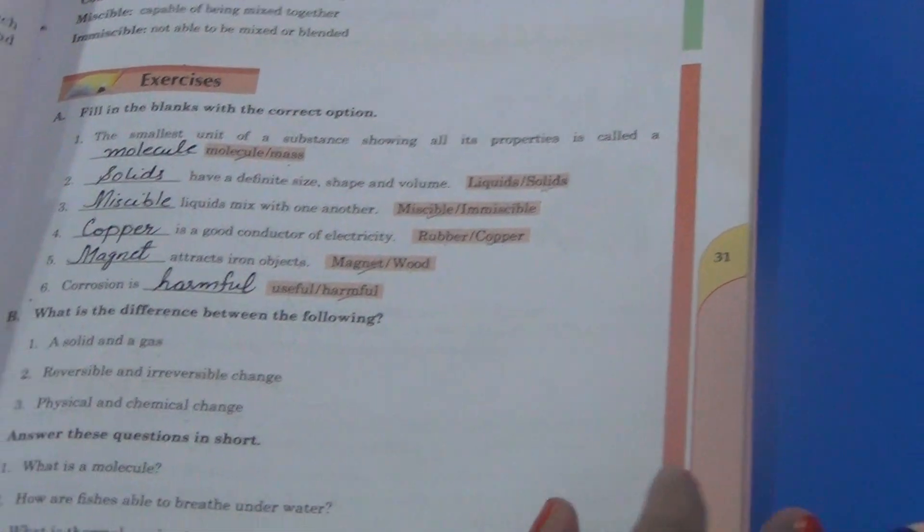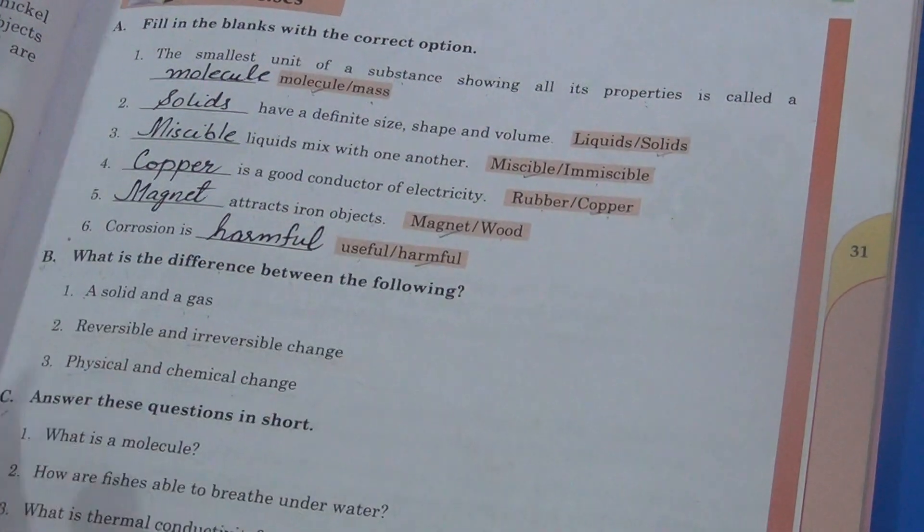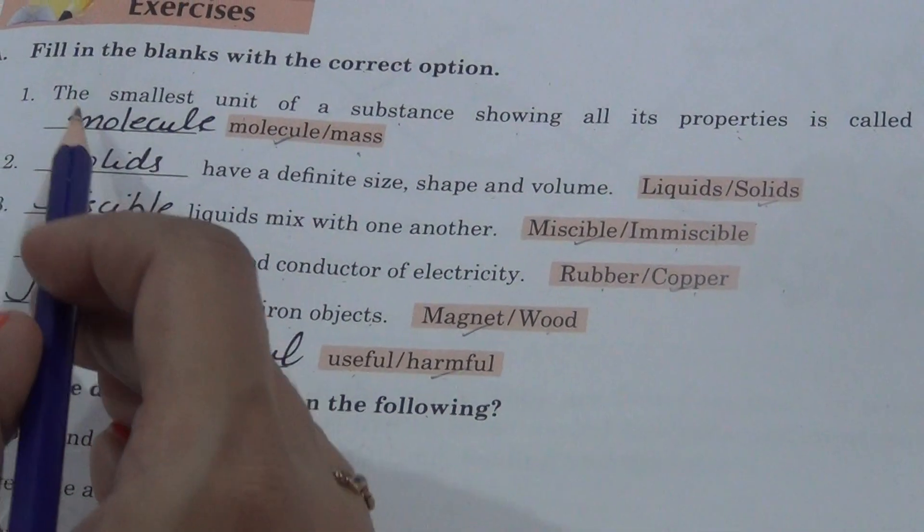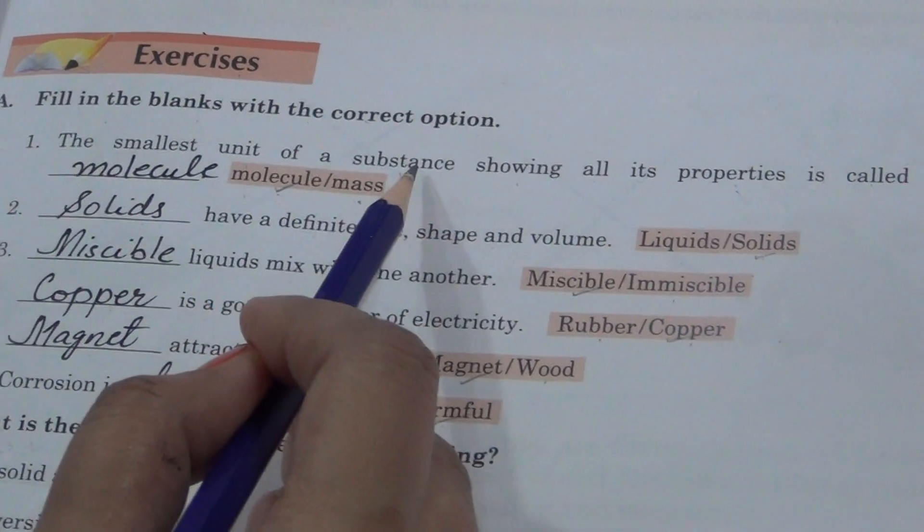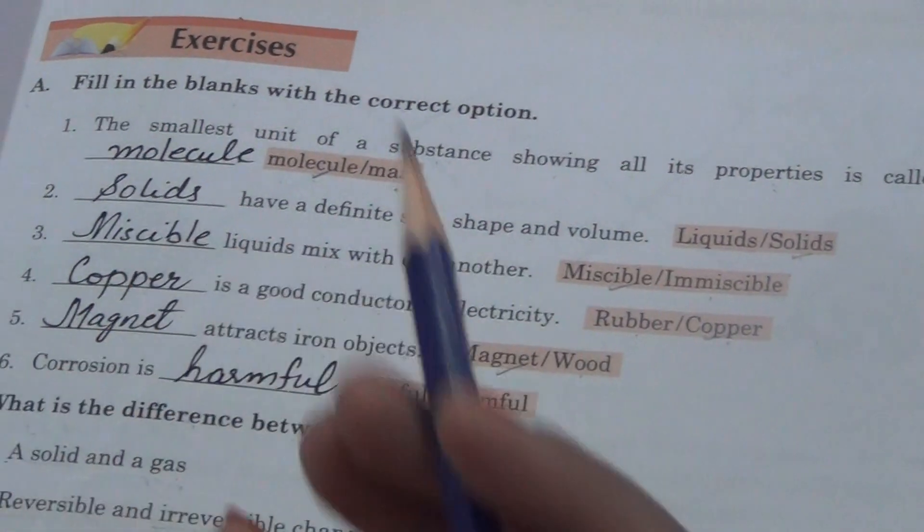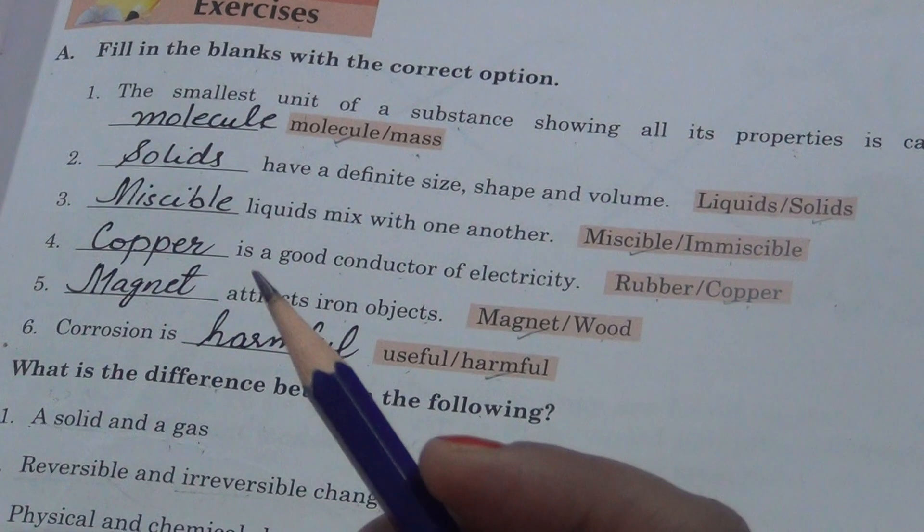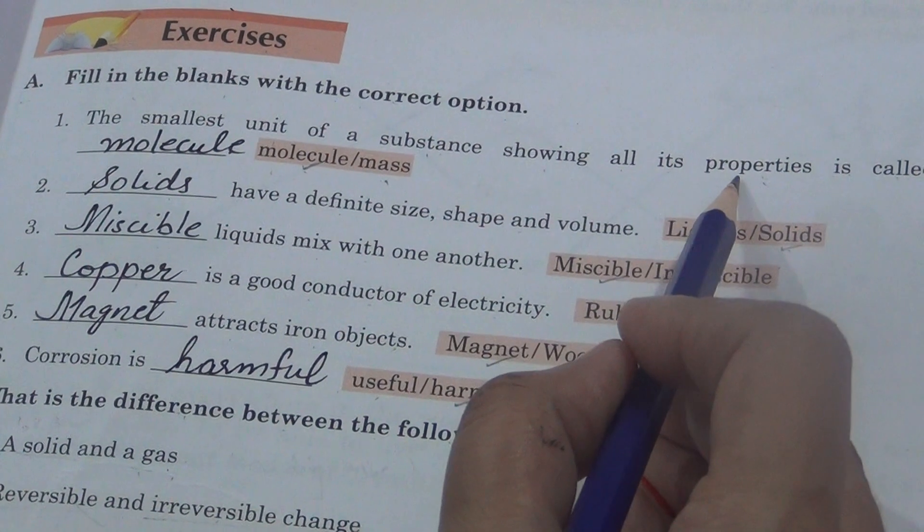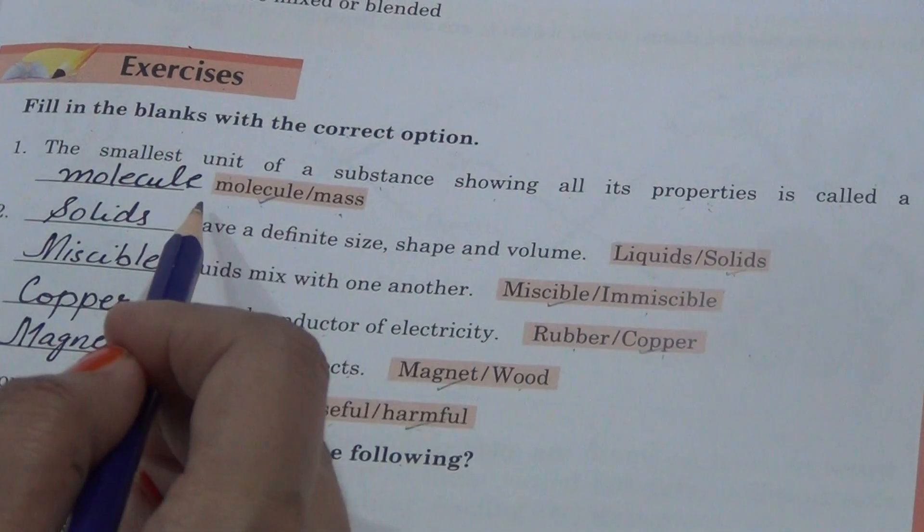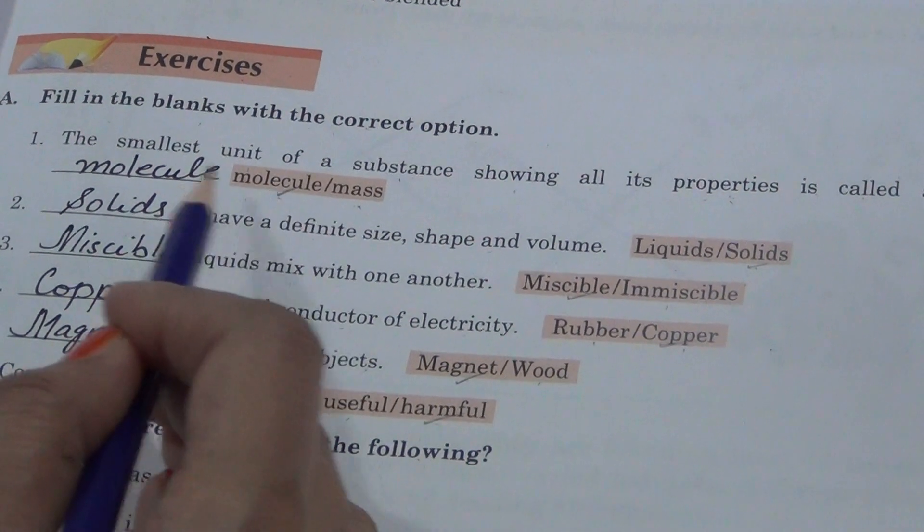Now you have activity in book, page number 31. Exercise A. Fill in the blanks with the correct option. Number 1. The smallest unit of a substance showing all its properties is called a dash. Molecule or mass. You have read this, that is molecule.